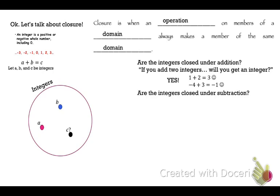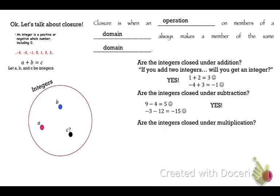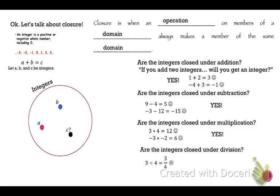Are integers closed under subtraction? 9 minus 4 equals 5 — yes. Negative 3 minus 12 equals negative 15 — yes. I can't find a counterexample, so yes. Multiplication: 3 times 4 is 12, negative 3 times negative 2 is 6, 100 times 2 is 200 — yes, closed under multiplication. Division: 3 divided by 4 equals 3/4. 3/4 is not an integer — it's a rational number but not an integer. So integers are not closed under division.